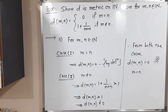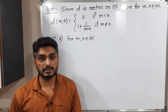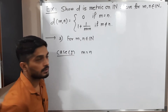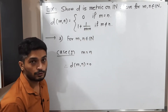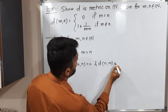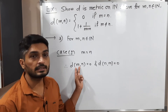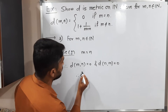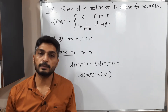Now let us prove the third condition: D(m,n) = D(n,m). Let m and n be natural numbers. Case 1: m = n. By definition D(m,n) = 0, and since m = n implies n = m, we also have D(n,m) = 0. Both are equal to 0, so D(m,n) = D(n,m). This proves symmetry for the first case.